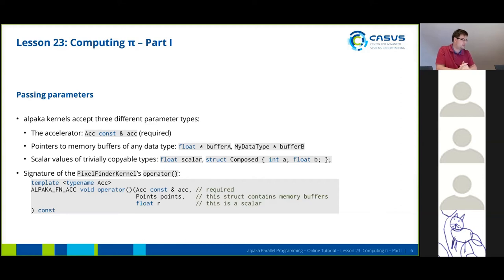Then you can pass pointers to memory buffers of any data type. So you can just use built-in values or your own defined values. You just need to pass it in as a pointer. And you can also pass in scalar values of trivially copyable types, meaning built-in C++ types or composed types that only contain trivial types as well.